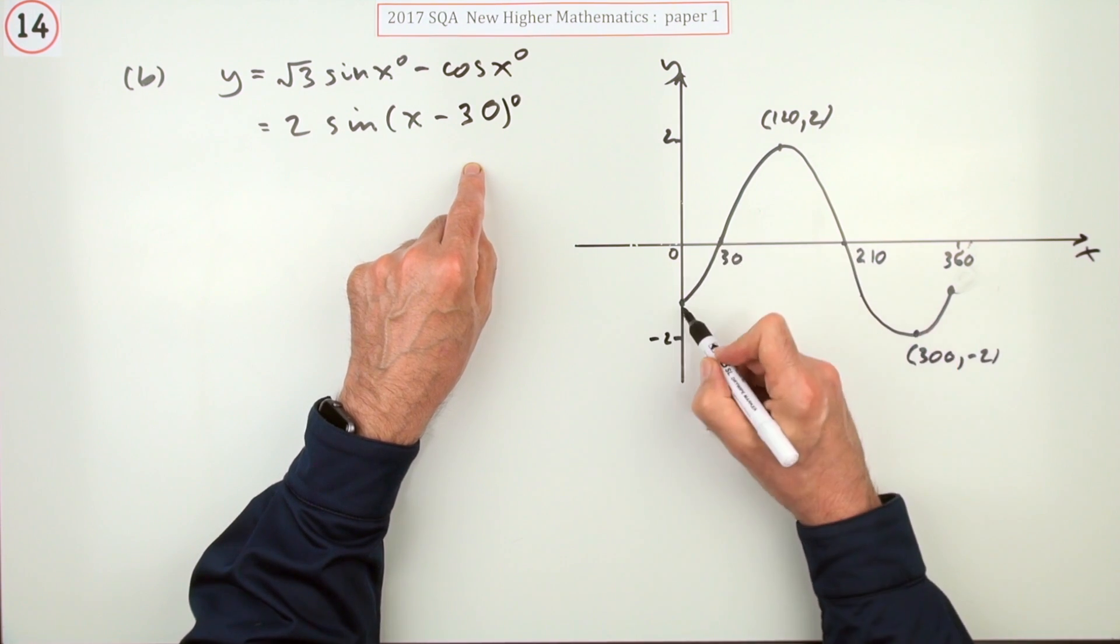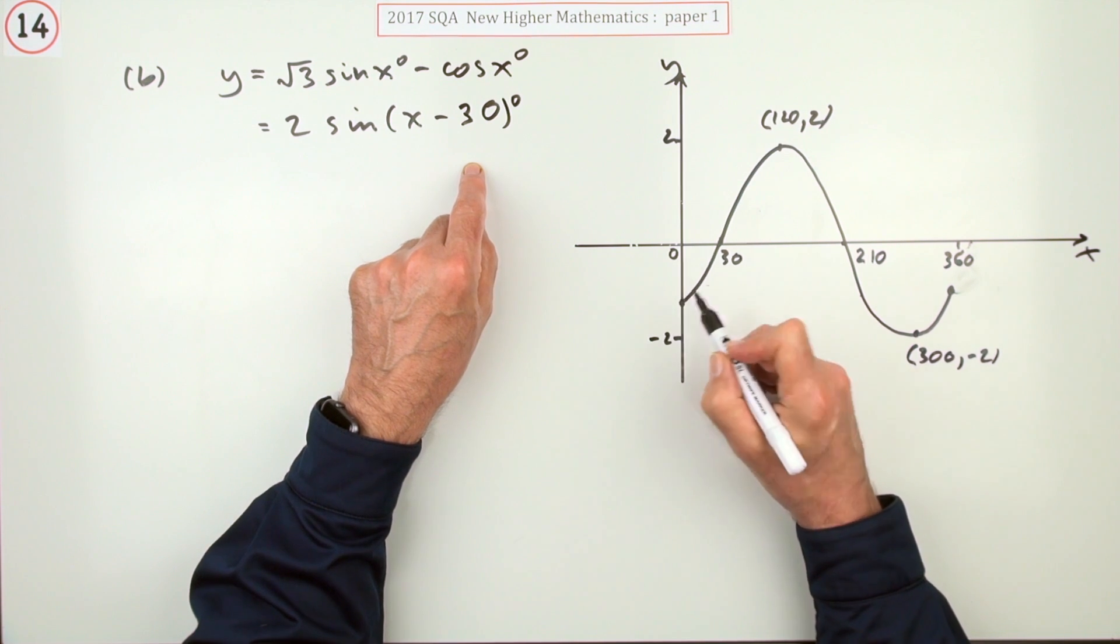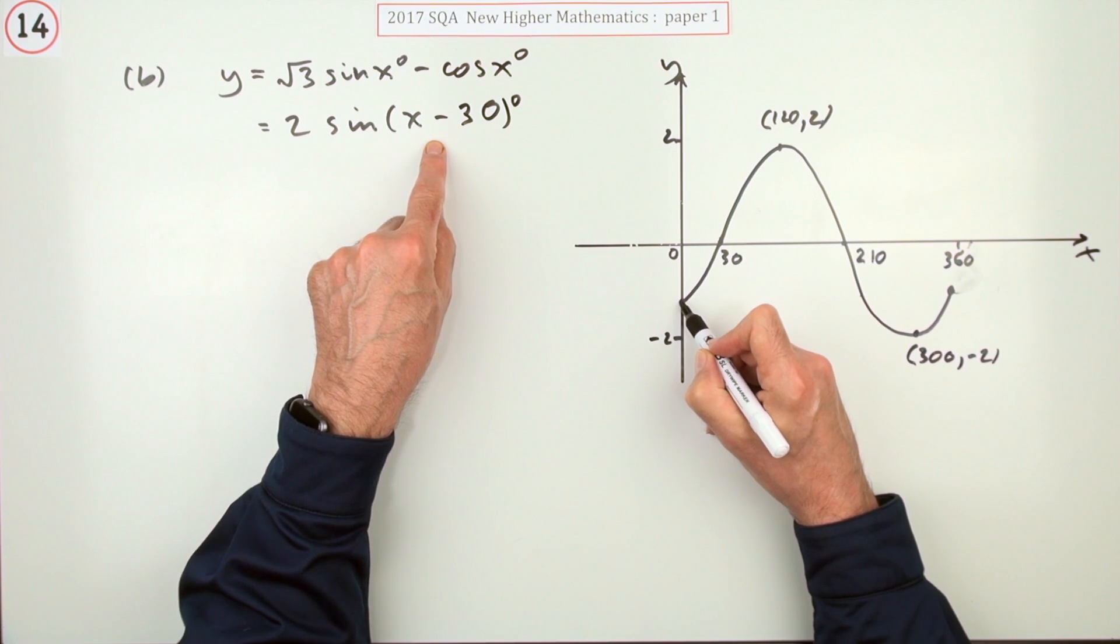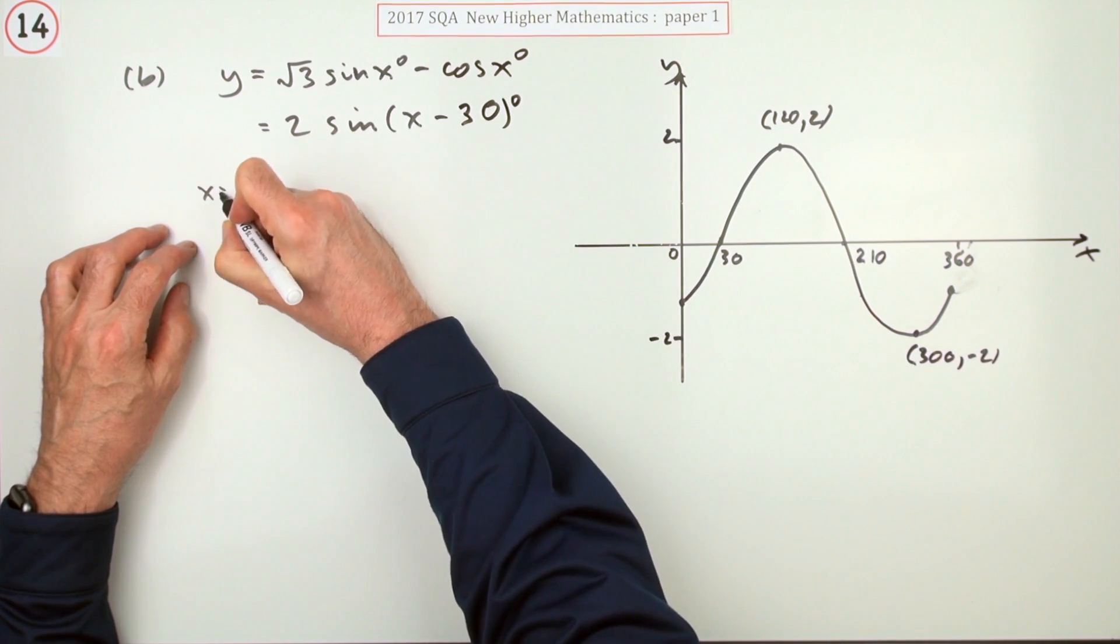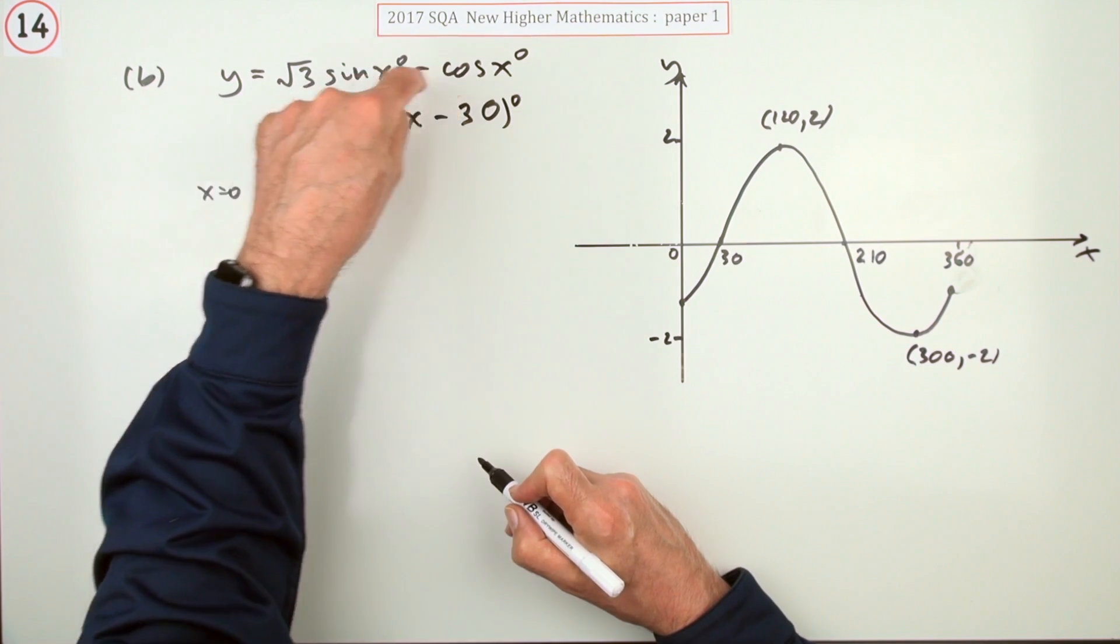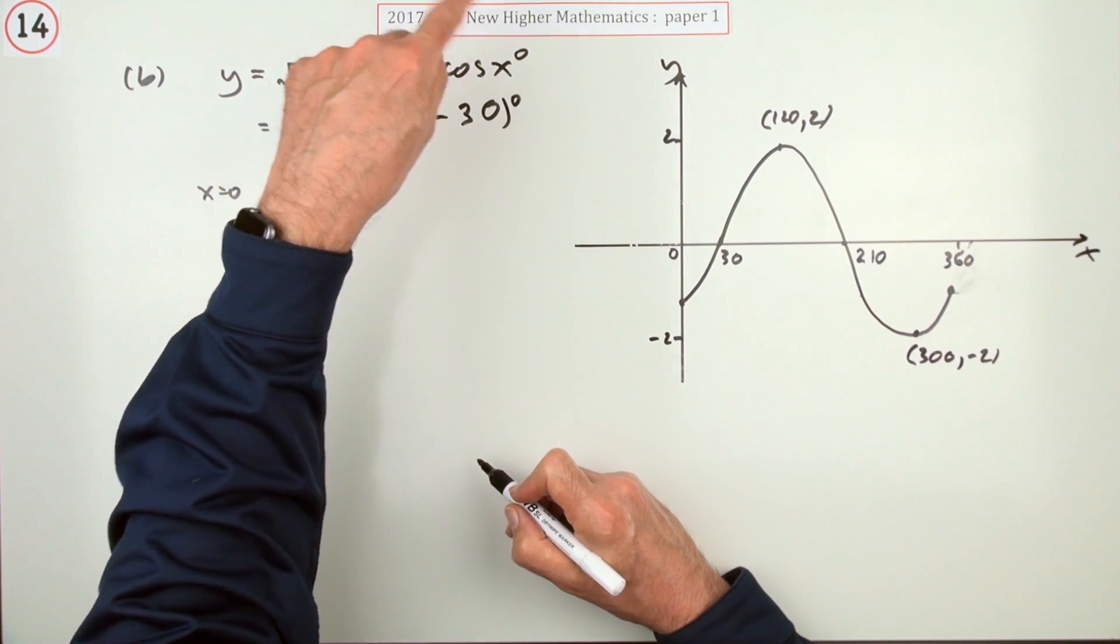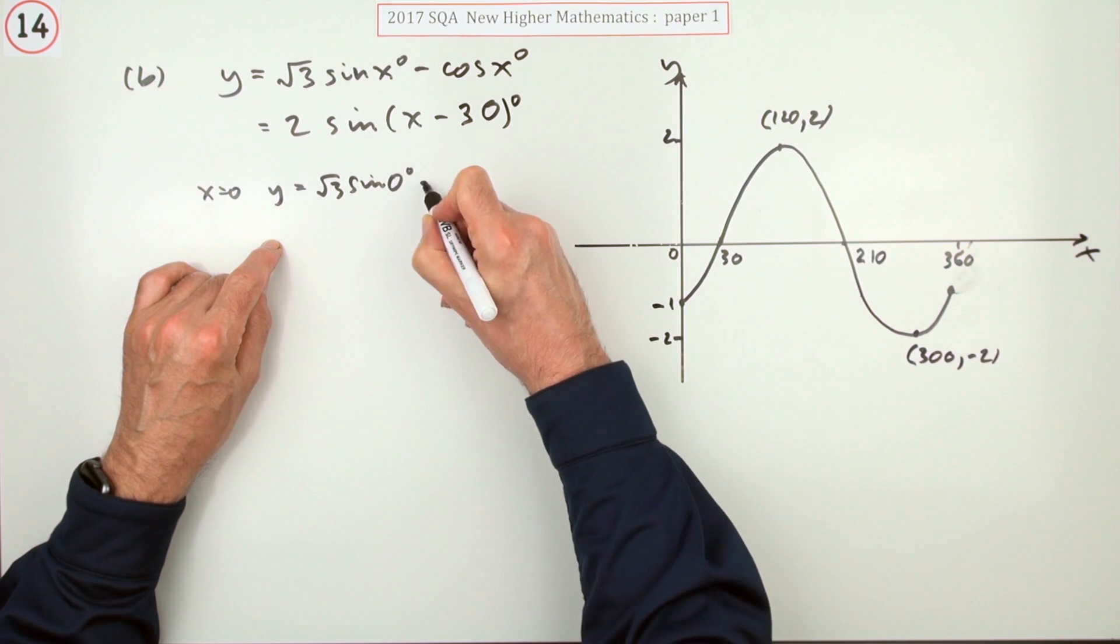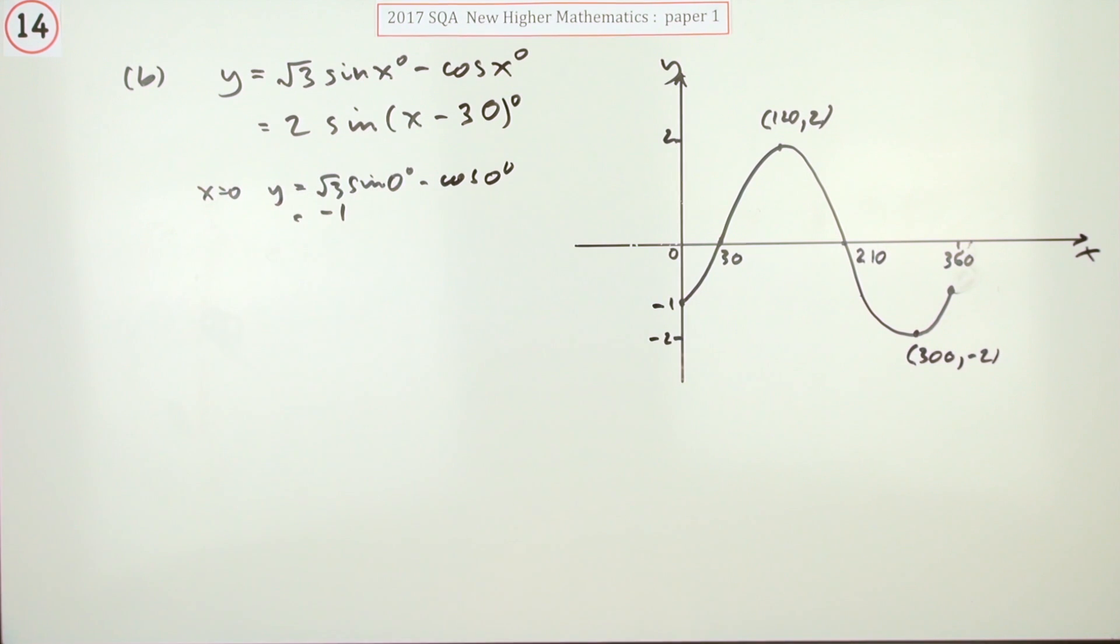So that only leaves one point I've not mentioned, that's this one, where does it cross the y-axis. Well, it crosses the y-axis when x is zero, so you could put x is zero into here and then work this bit out. But it's actually for this one easier to use the original. Just one extra little note, when x is zero y would be, and it's easier putting zero into this because you know the values of sine and cos at zero. Sine is zero, so that part goes, so you just got minus cos of zero, which is one, should be minus one. But I'll show it anyway. That'll be root three sine zero minus cos zero, and of course that part's zero, so that comes to negative one.